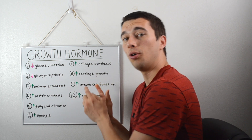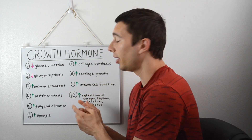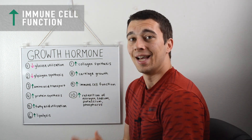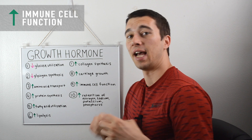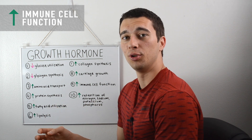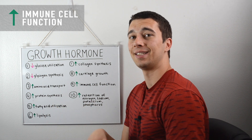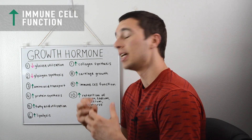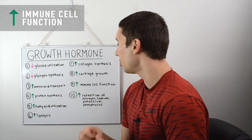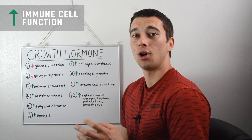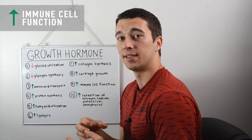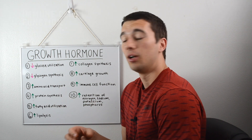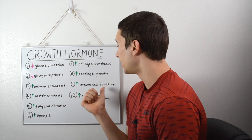An increase in growth hormone in the bloodstream also helps with immune cell functioning. This is because as growth hormone moves throughout the bloodstream it's going to stimulate releases of other cells like T cells and B cells and cytokines. These are all related to processes such as inflammation and repair within the immune system.